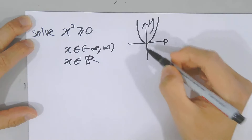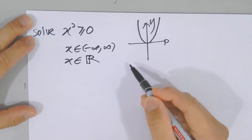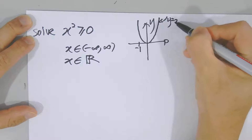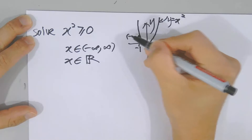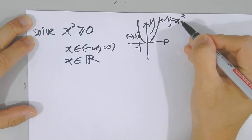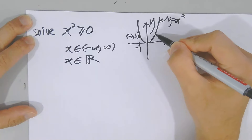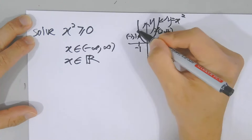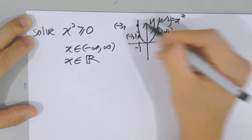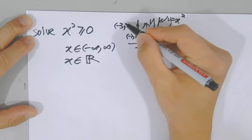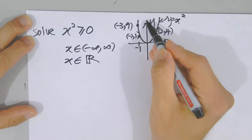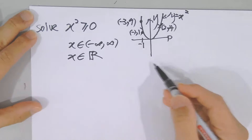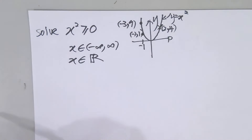Because x² is at least zero, any value of x works. For example, this is the graph for y = x². If x is negative one, then y is one (positive). If x is two, y is four. If x is negative three, y is nine. The value of y is always positive for all values of x. That's why the solution for x² ≥ 0 is everything — all real numbers.